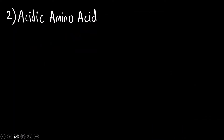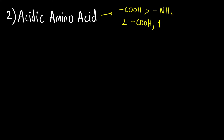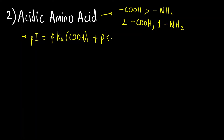Now let us see acidic amino acids. An acidic amino acid has more carboxylic acid groups than amine groups — for example, two COOH groups and one NH₂ group. To find the isoelectric point, you take the average of the pKa values of the two carboxylic acid groups: pKa of COOH group 1 plus pKa of COOH group 2, divided by 2.